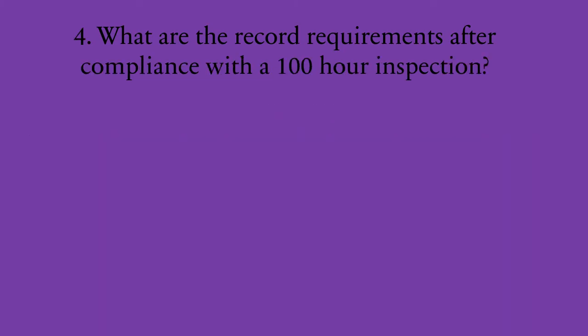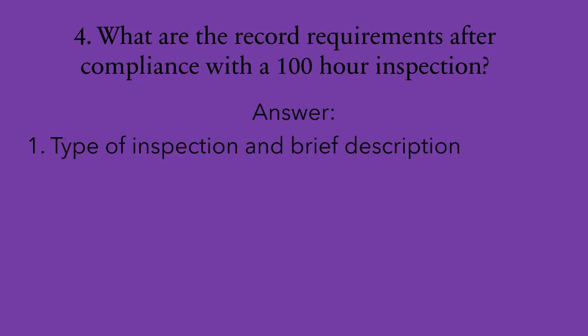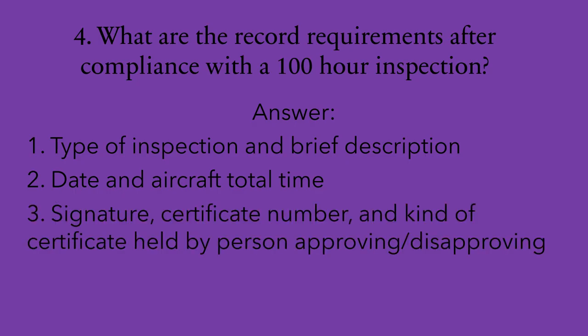Number three: what are the record requirements after performing maintenance? One, a description of the work performed or a reference to data acceptable to the administrator. Two, the date of completion of the work. Three, the name of the person performing the work. And four, the signature, certificate number, and the type of certificate held by the person approving the work. Number four: what are the record requirements after compliance with a 100-hour inspection? One, the type of inspection and a brief description. Two, the date and aircraft total time. Three, your signature, certificate number, and kind of certificate held. And four, the I-certified statement.